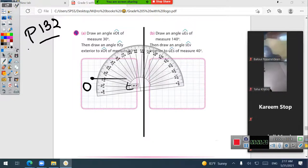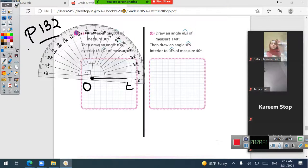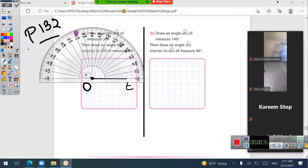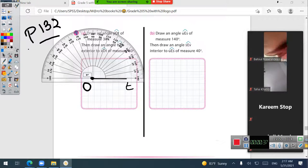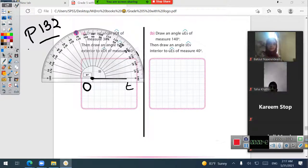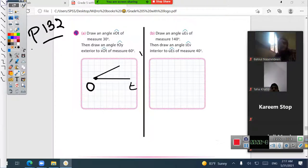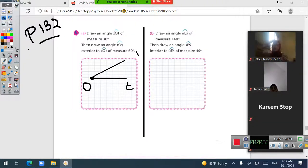I will align the protractor with the line I've drawn and count from 0: 10, 20, 30. No need to elongate it. It's 30 degrees, angle XOT.